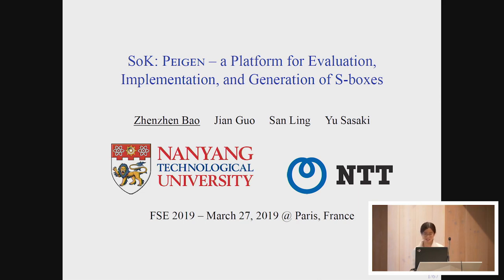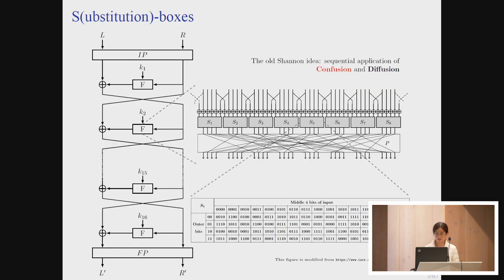Thanks for the introduction. I would like to introduce our SOK paper on the design of S-box and a platform for evaluation, implementation and generation of S-box. Many block ciphers follow the Shannon idea of sequentially applying confusion and diffusion. Confusion is generally provided in the form of a substitution box, or S-box for short.